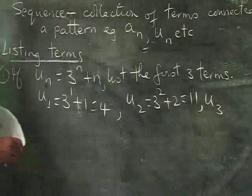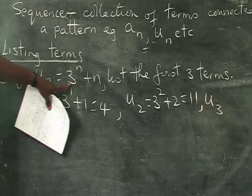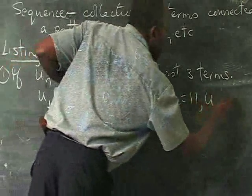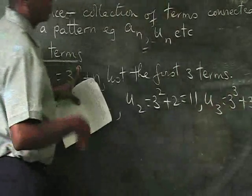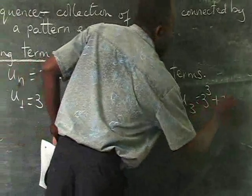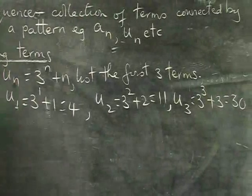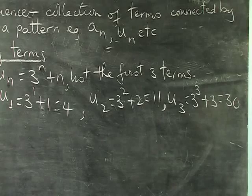So we have two terms so far. Now U3 would mean that N is now 3. So we get 3 to the power 3 plus 3. 3 to the power 3, 3 times 3, 9 times 3, 27. Plus 3 would give us 30. So that's our first example in listing terms.